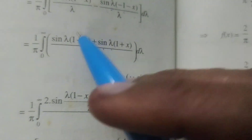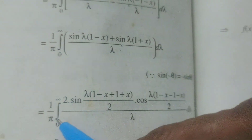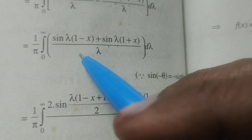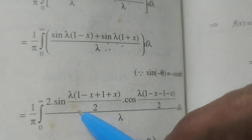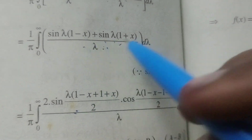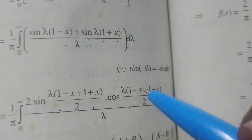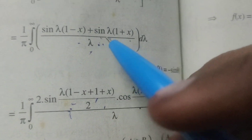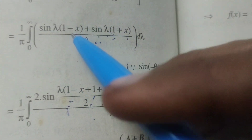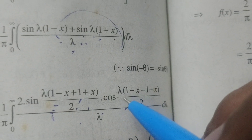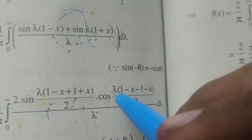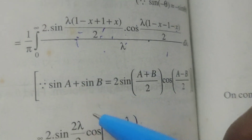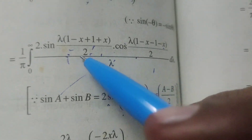Applying the formula sin A + sin B = 2 sin((A+B)/2) · cos((A−B)/2), with A = λ(1 − x) and B = λ(1 + x): (A+B)/2 = λ and (A−B)/2 = −λx. Therefore we get (1/π) · integral from 0 to ∞ of (2 sin λ · cos(−λx)) / λ dλ.